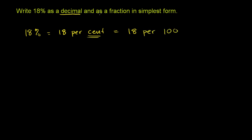Actually, I said I would do the decimal first, but we can start putting it into a fraction first. 18 per 100 as a fraction literally means 18 per 100. This literally means 18 per 100, or 18 hundredths.